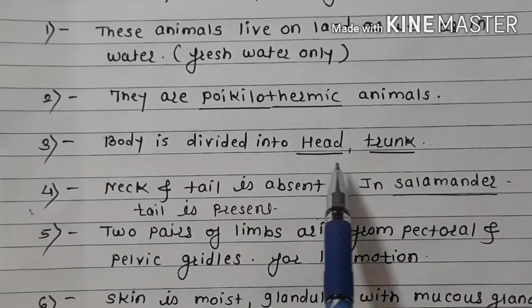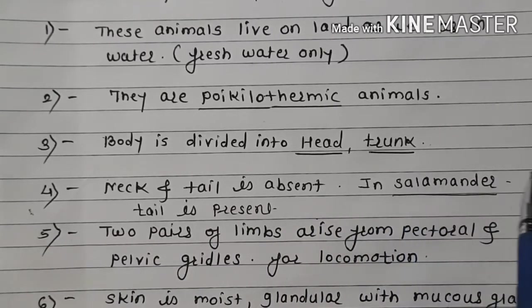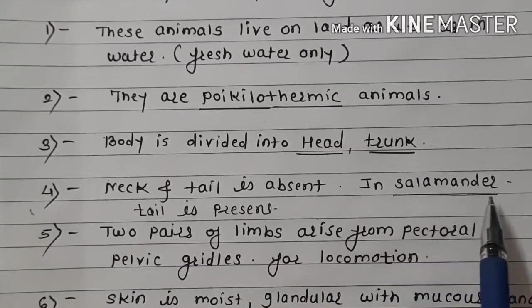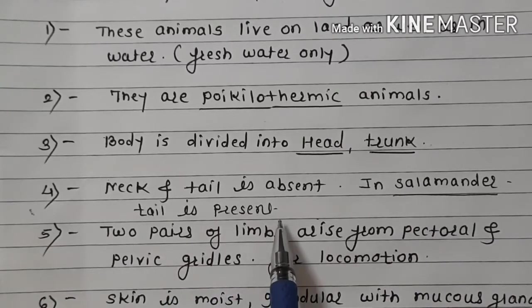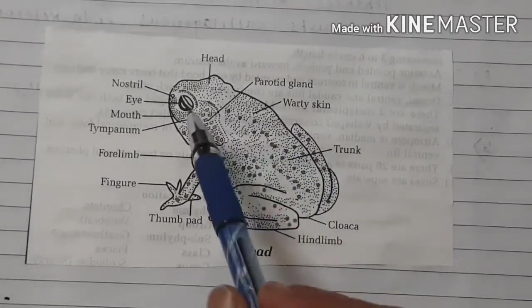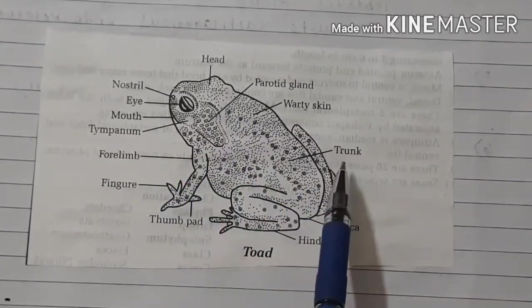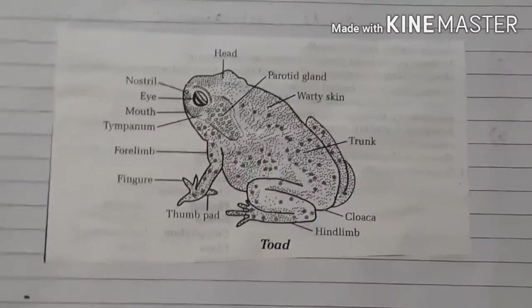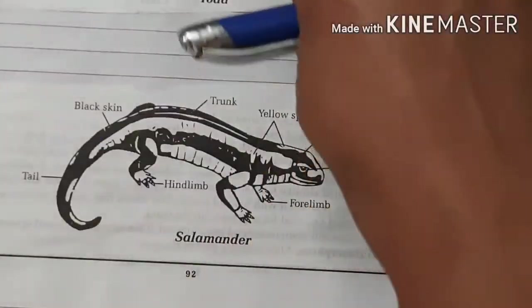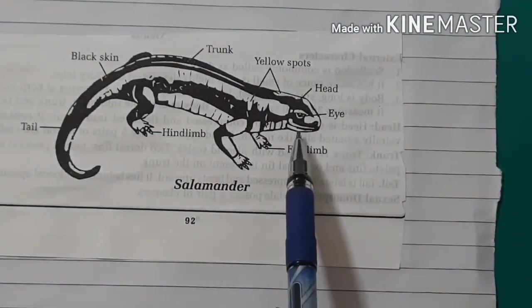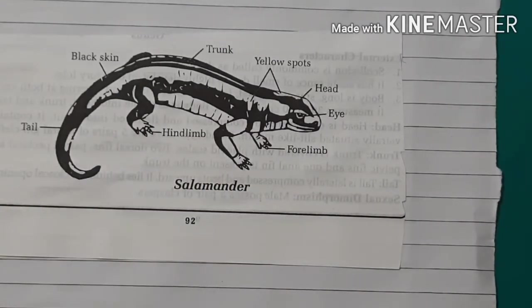Body is divided into head and trunk. Neck and tail are absent. But in salamander, tail is present. In frog, neck is absent and tail is also absent. But in salamander, the body is divided into head, trunk, and tail.